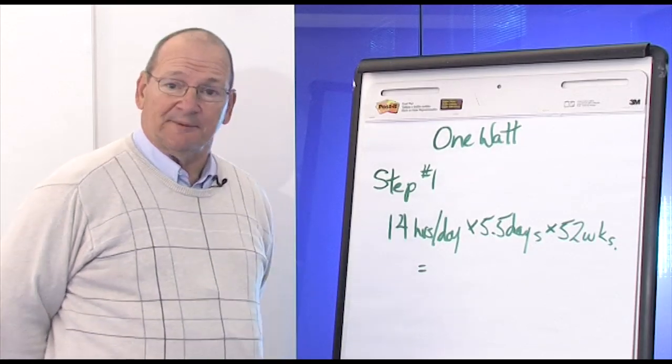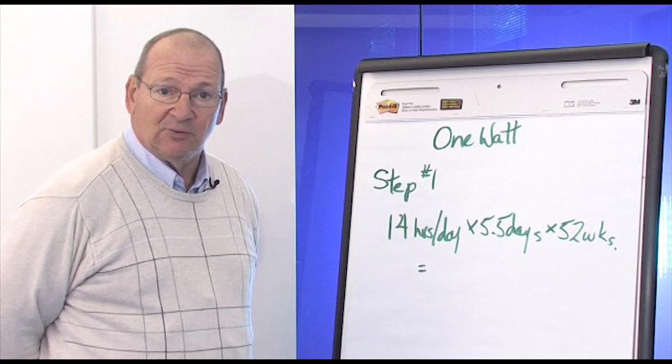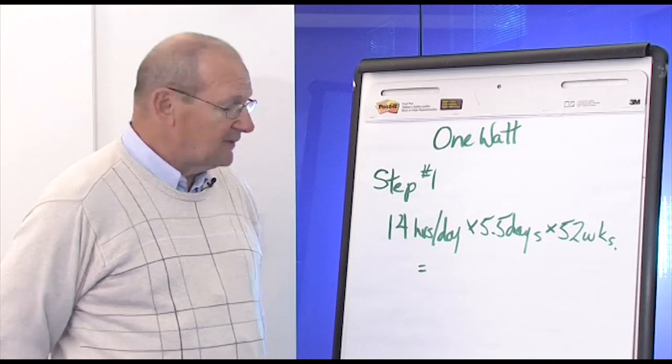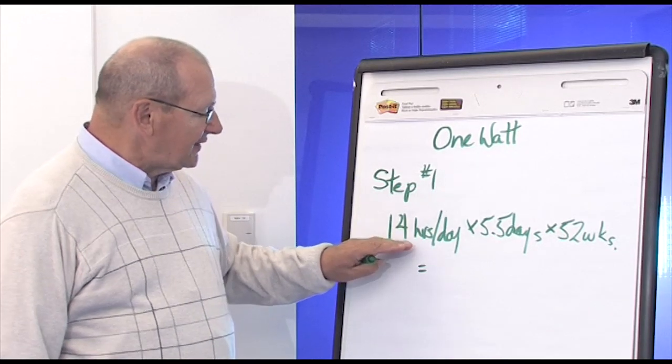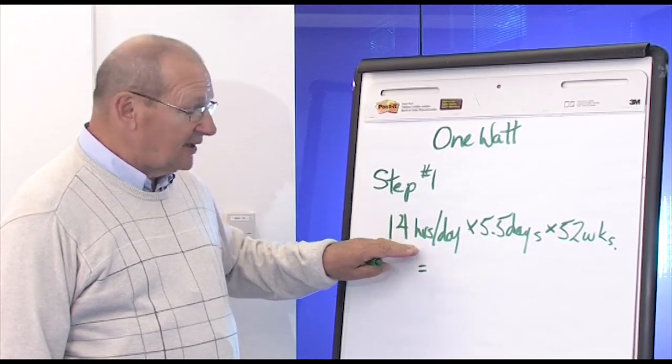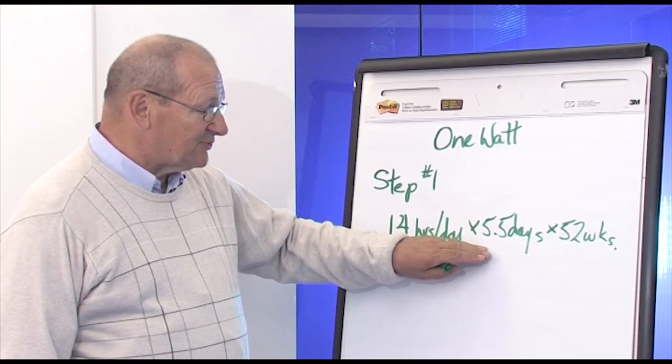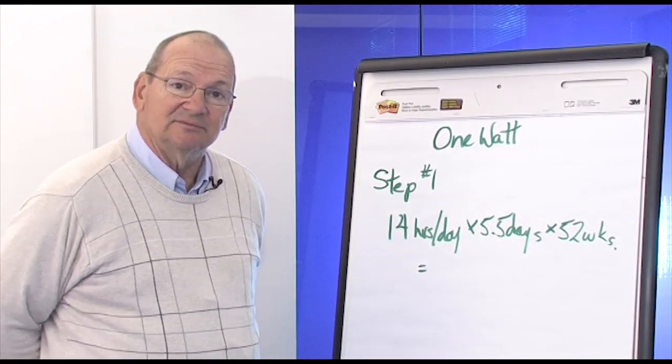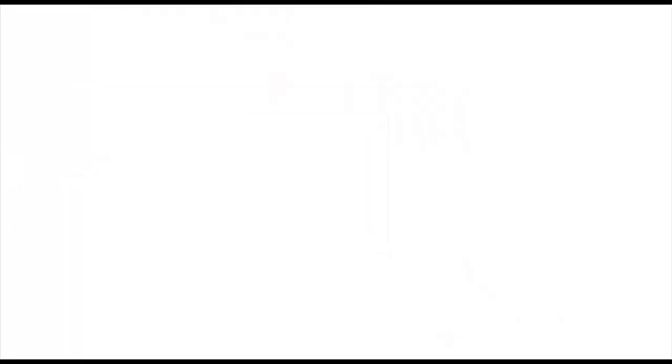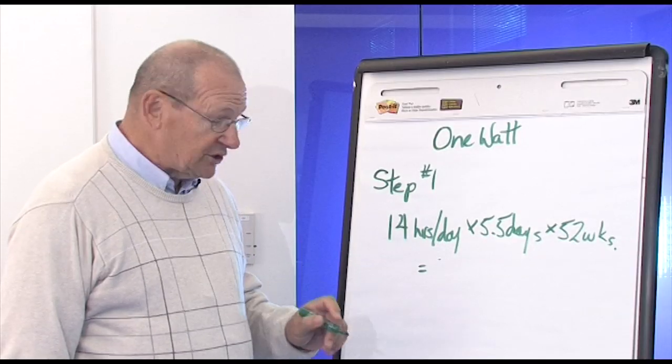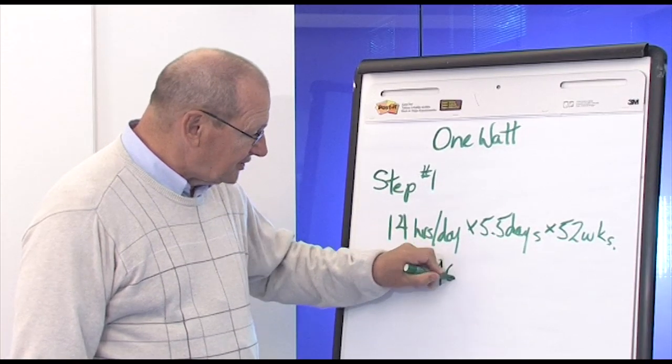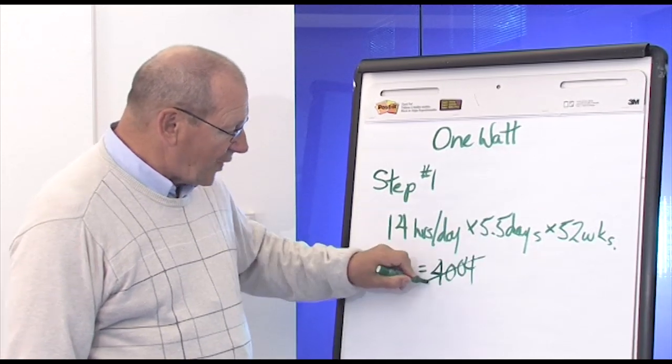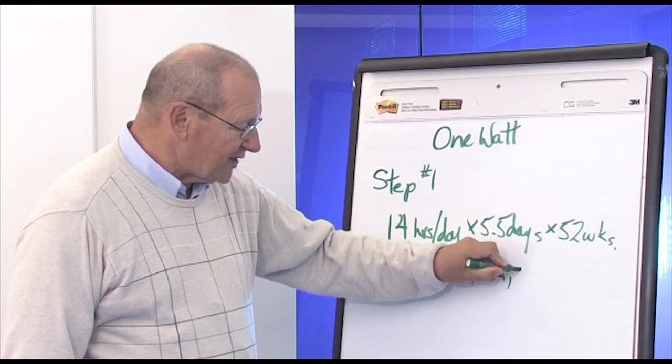Welcome back. Step one, we're going to calculate the annual hours that the lights are on for a typical year in an office building. I want you to multiply 14 hours per day times 5.5 days per week times 52 weeks. Pause the video, do the calculation. You should get 4,004 hours. So round that to the nearest thousand, 4,000.